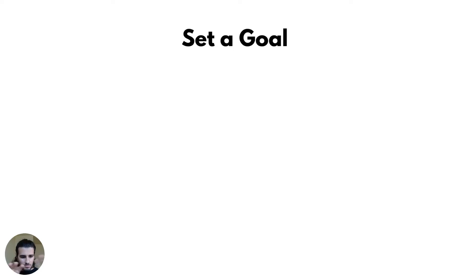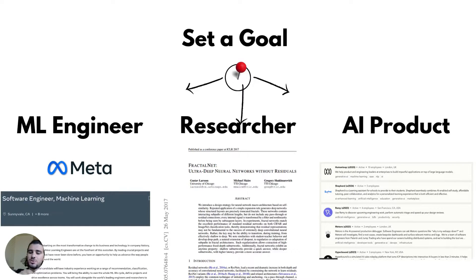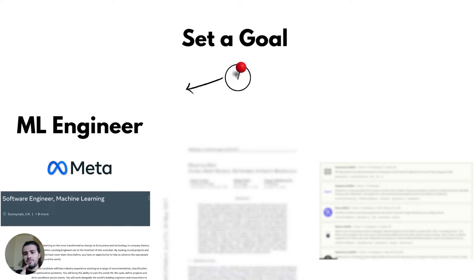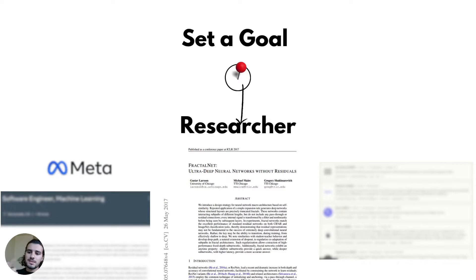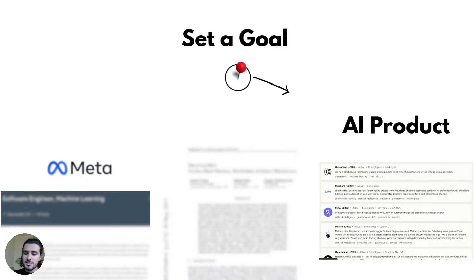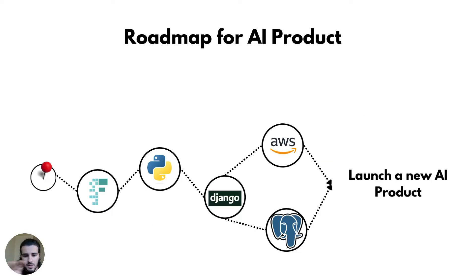I'm going to set three rough goals that I usually see people ask me about, and at the end of the video I'll use these three goals to show an example of how to set up these roadmaps: the ML engineer, researcher, and AI product. The ML engineer path is much more heavily focused on programming topics since it's usually a prerequisite to get a job. The researcher path relies less on programming and more on cutting-edge research and how to replicate results. The AI product path has more to do with software engineering and how to use pre-trained models — not so much the training portion.